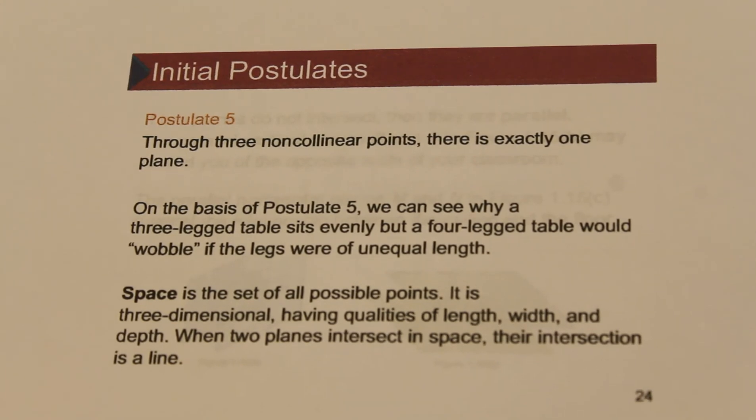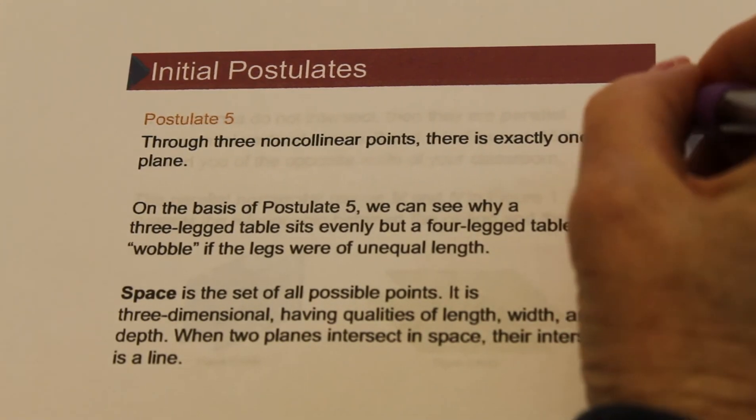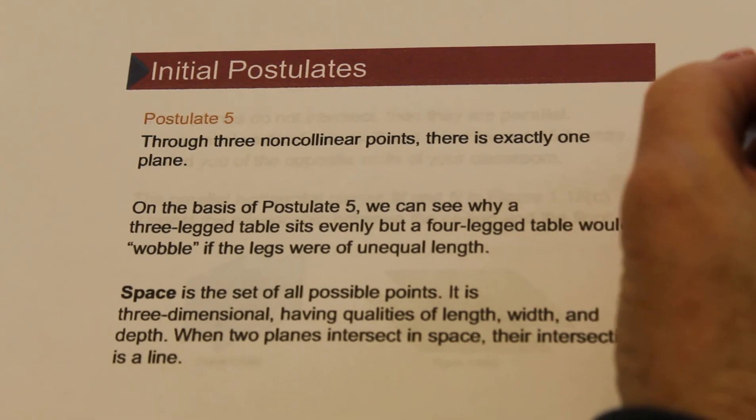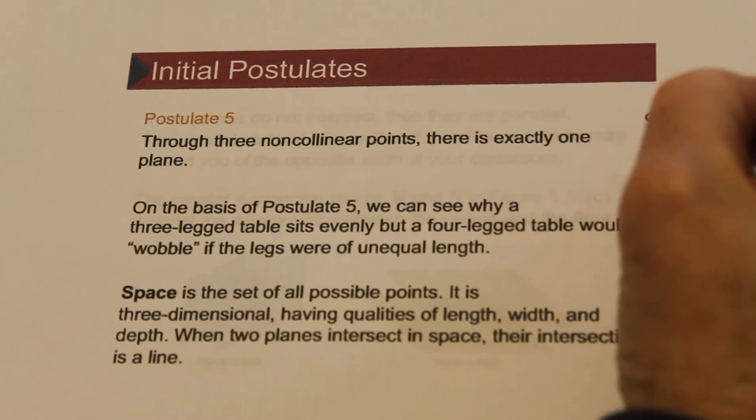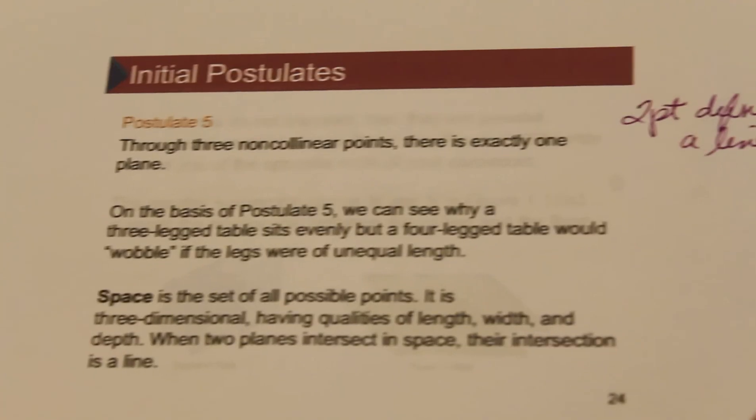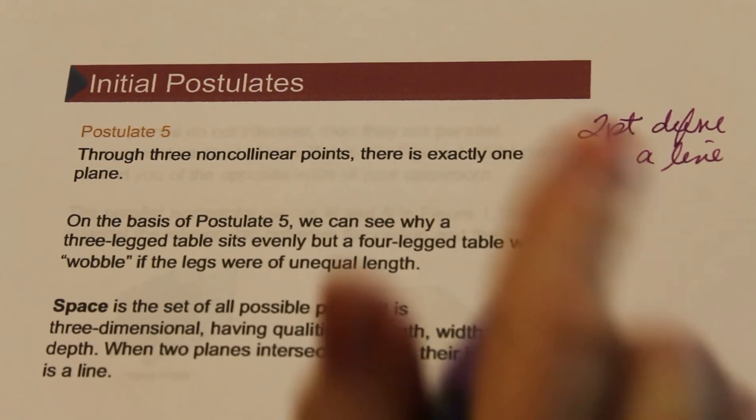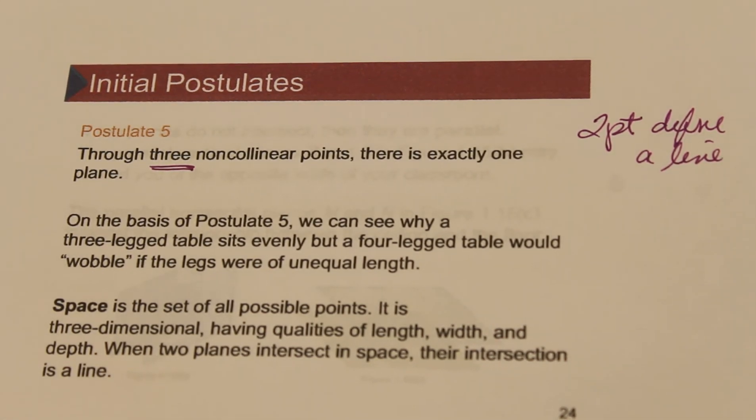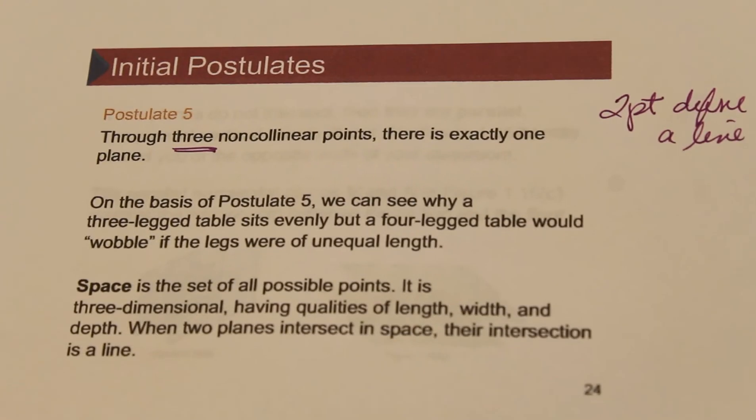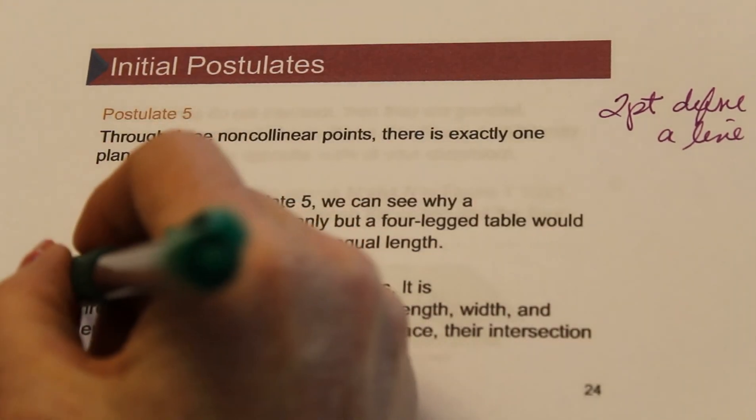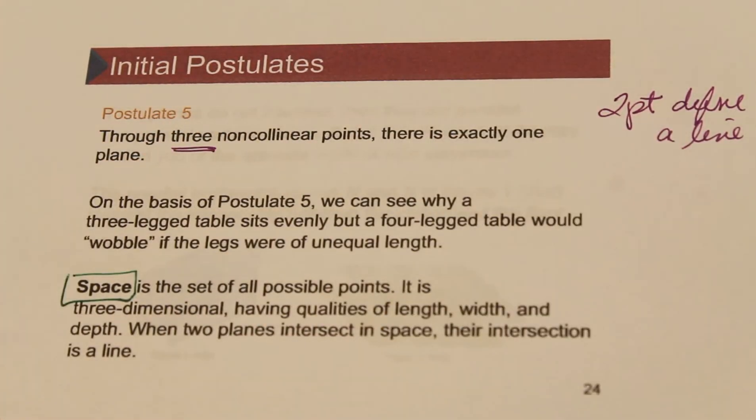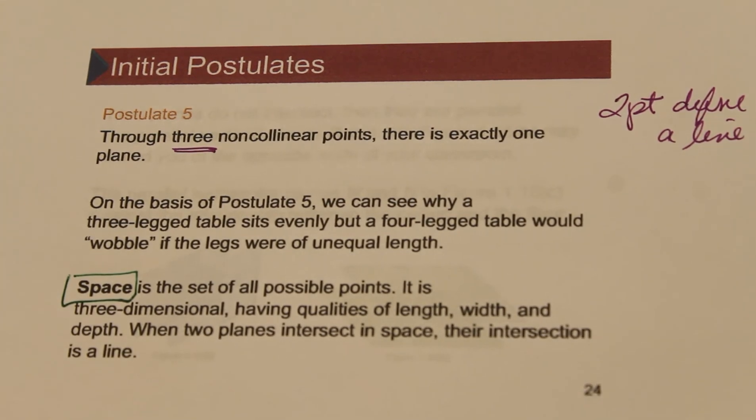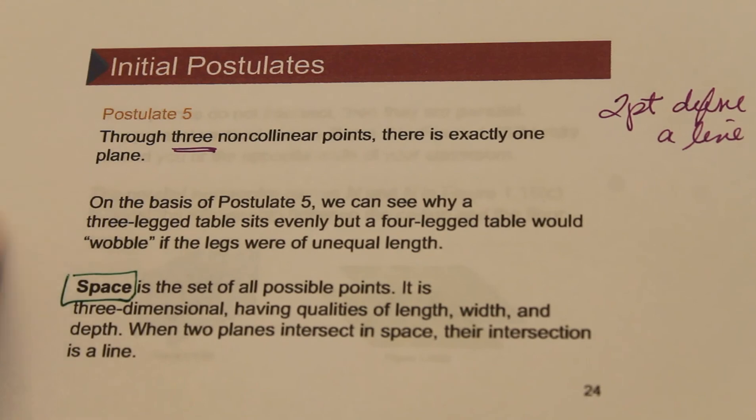So you need two points to define a line, you need three points to define a plane, and then all the planes together, that's what we call space. Space is the set of all possible points. It's a three-dimensional object.